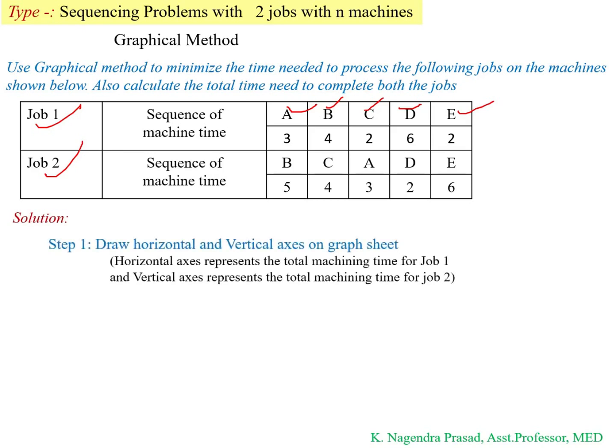Step 1 is to draw the horizontal and vertical axes on the graph sheet. The horizontal axis represents the total machining time for Job 1, and the vertical axis represents the total machining time for Job 2.